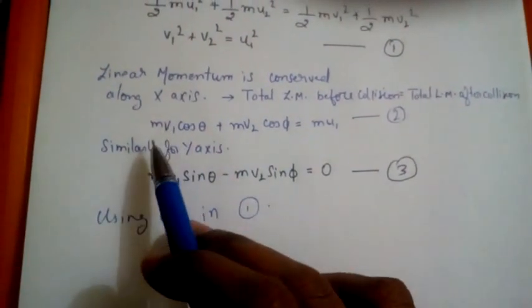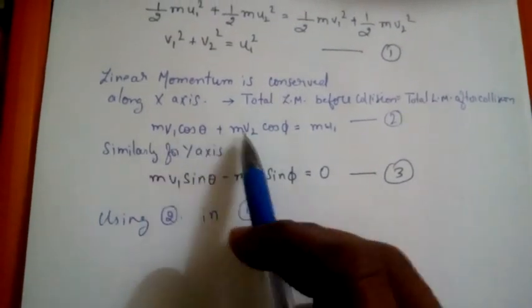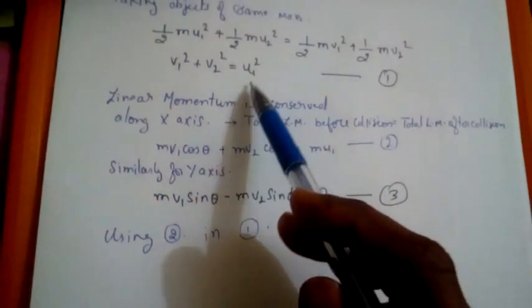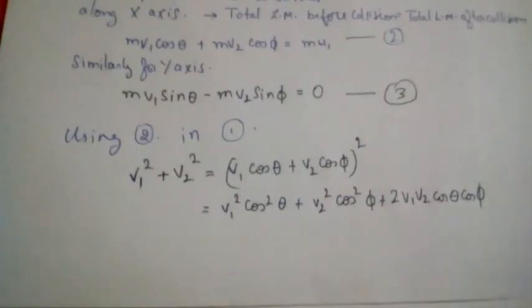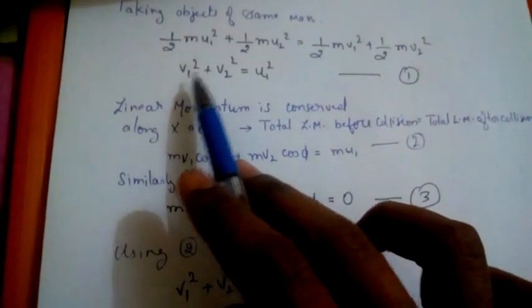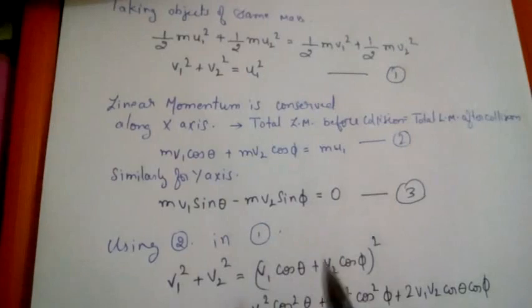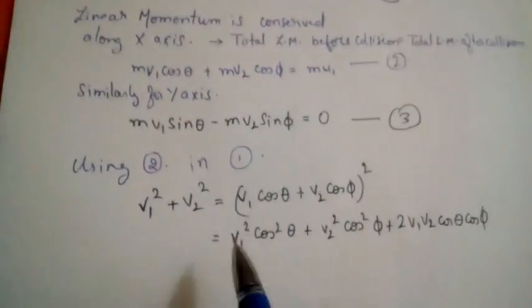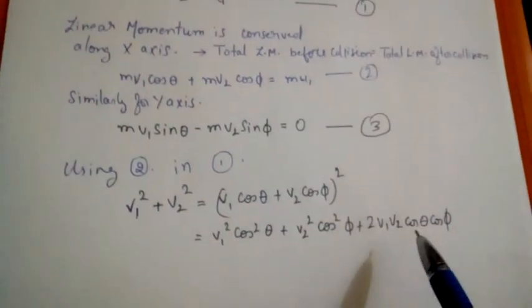After cancelling m, we have Equation 2: v1·cosθ + v2·cosφ = u1. Substituting u1 into Equation 1, we replace u1² with (v1·cosθ + v2·cosφ)², which expands as a binomial of the form (a + b)².